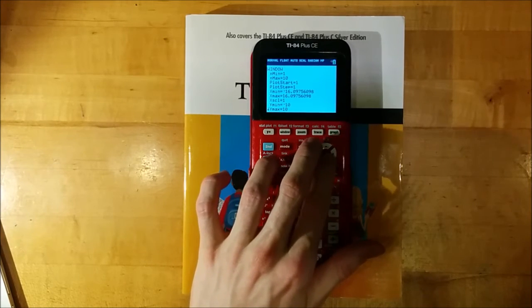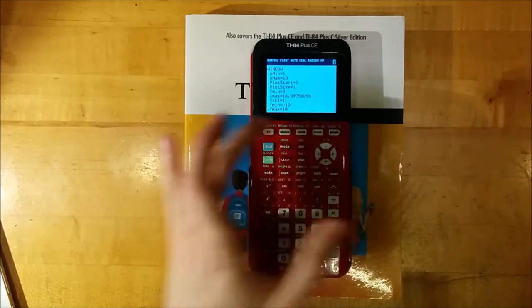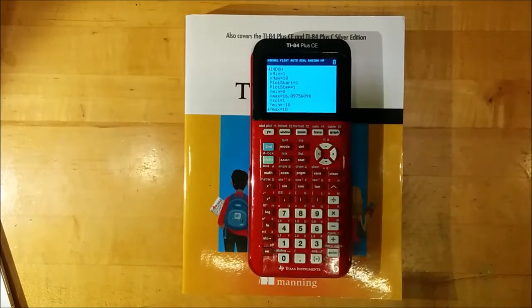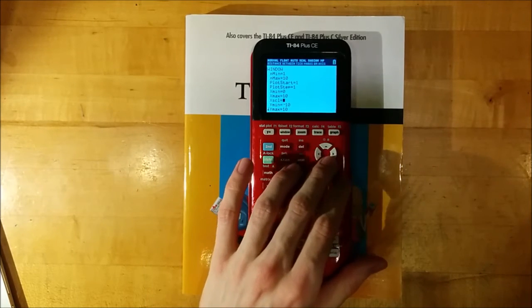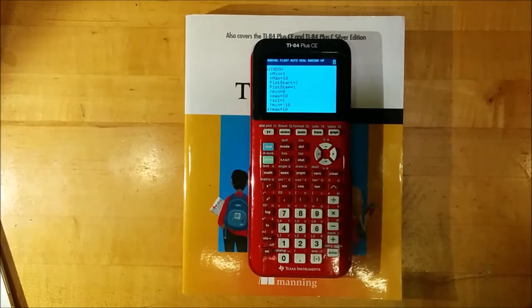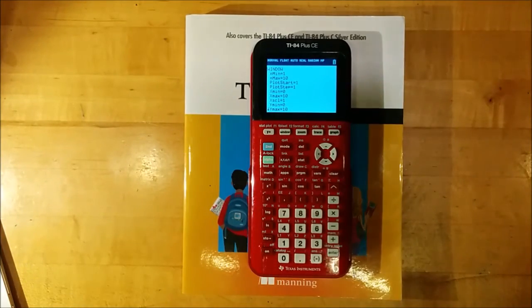So we have nmin is 1 and nmax is 10. So let us change our xmin, which is also the value of nmin graphed on those axes to 0. The maximum value to 10. And then pick some good y bounds. Well, we know that we're starting with nmin equals 1 and 1 squared is 1. So the lowest we could possibly have on our y axis is 1. Let's put in 0 just so we see the x axis there.